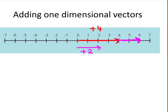You place the start of the plus 2 at the end of the plus 4 and then add the two together. The important thing is you can't change the direction or length of the plus 2 vector, but you can change its position. Overall you end up with the vector plus 6, so adding in one dimension is just like adding numbers.